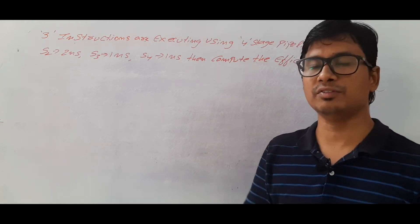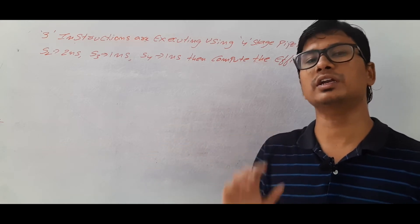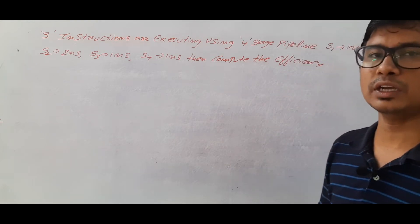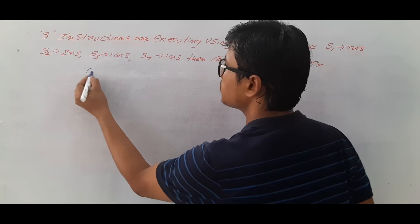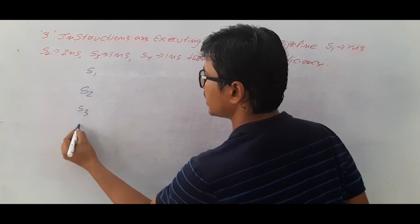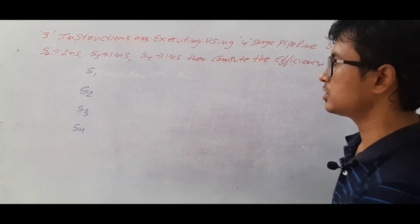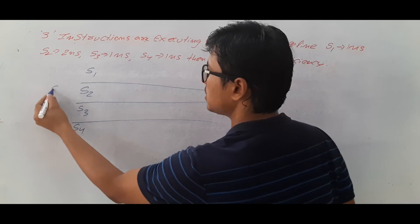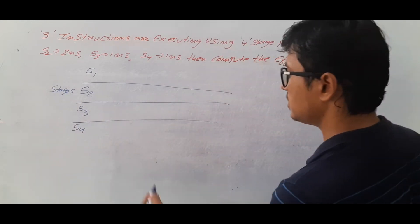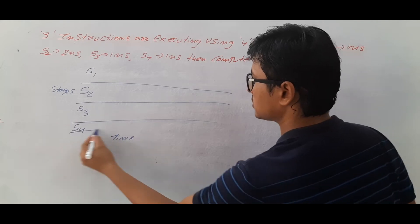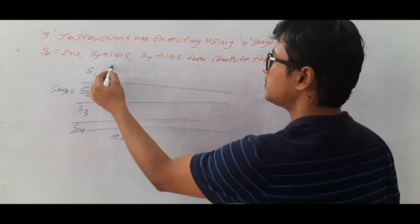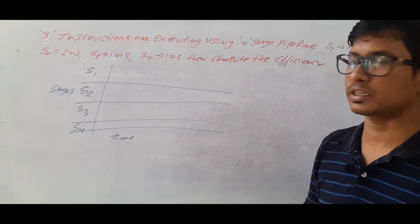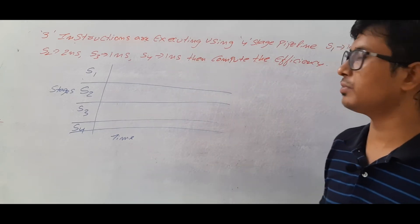Efficiency is equal to the number of cycles utilized divided by the total number of cycles. To find that, I need to construct the stage-time analysis diagram — stages on the y-axis and time on the x-axis. The key difference from previous questions is that each stage is taking a different amount of time; all stages are not taking an equal number of nanoseconds.